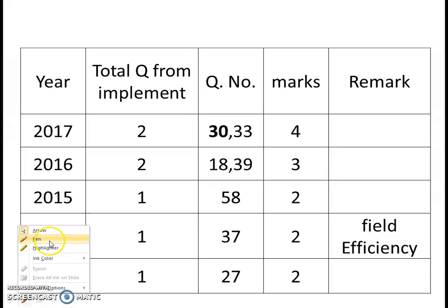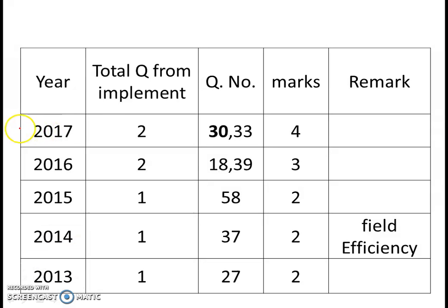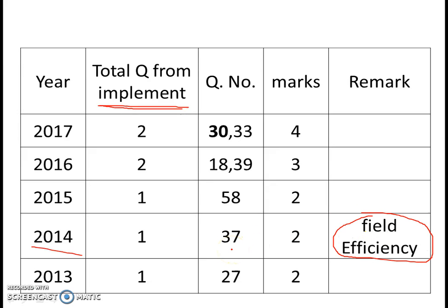Before going into the discussion, let's see some past year statistics. This question comes from the implement section — specifically about primary and secondary tillage implements — and is related to the forces acting on these. In 2014, the question was related to field efficiency, meaning there was no question particularly related to implement forces. With this table, I just want to say that if you are not able to solve this type of questions, because these questions are quite difficult and you need to visualize the entire situation.